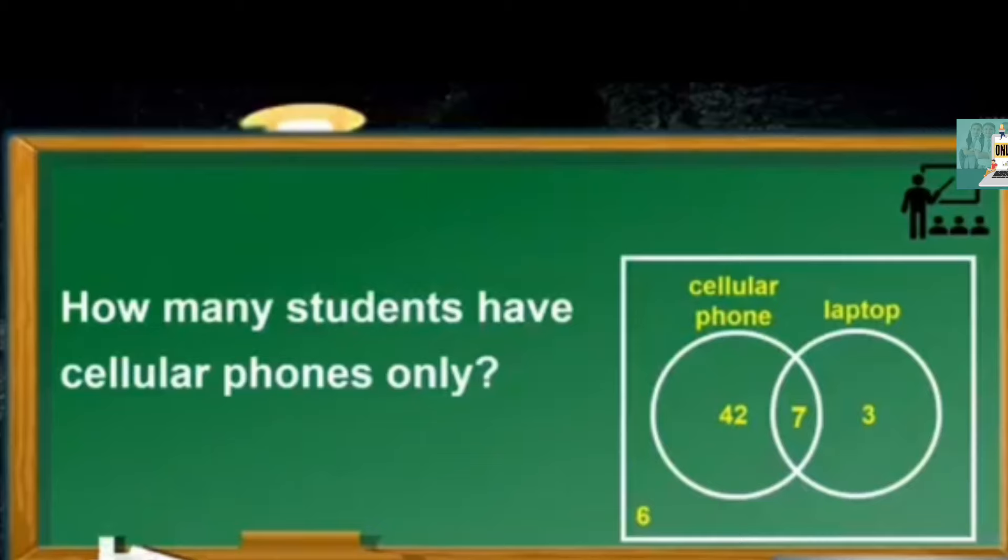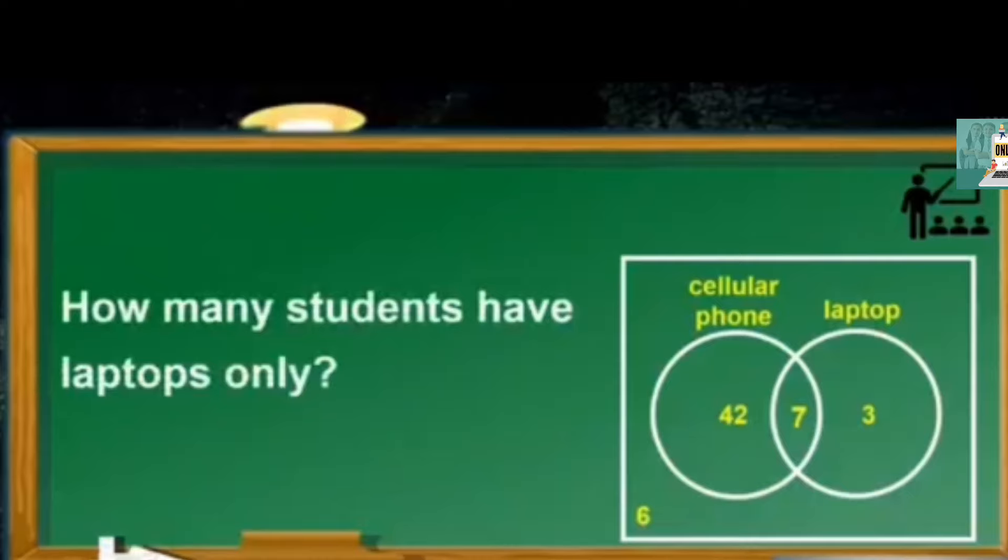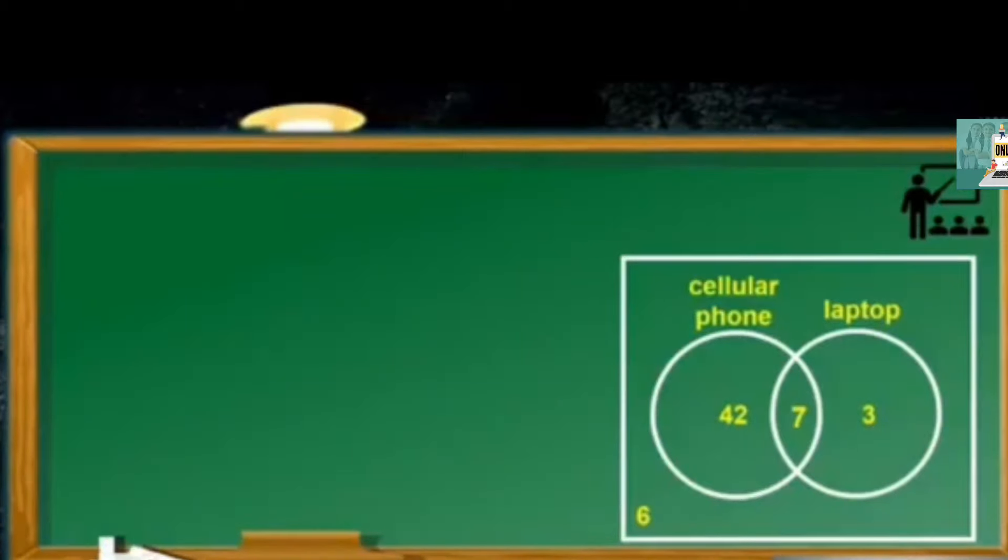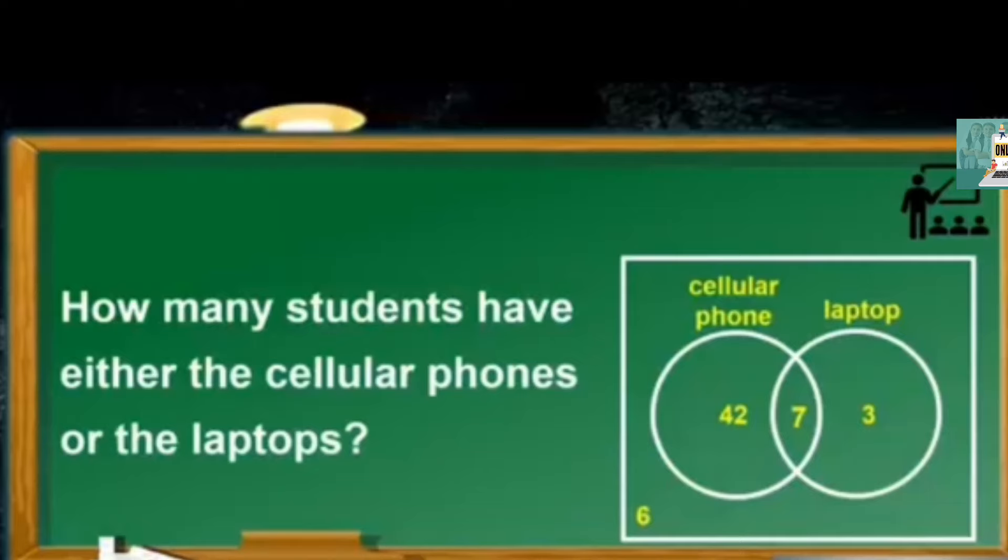How many students have cellular phones only? The answer is 42. How many students have laptops only? The answer is 3. If you were asked how many students have neither the cellular phones nor the laptops, the answer is 6. How many students have either the cellular phones or the laptops? The answer is 52. Do you follow? Let's have a complex one.